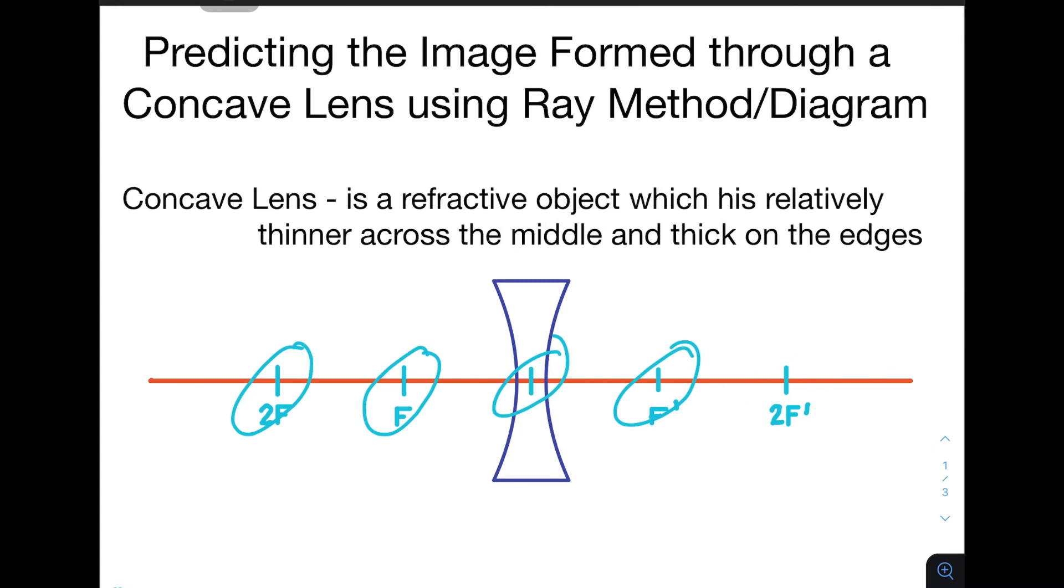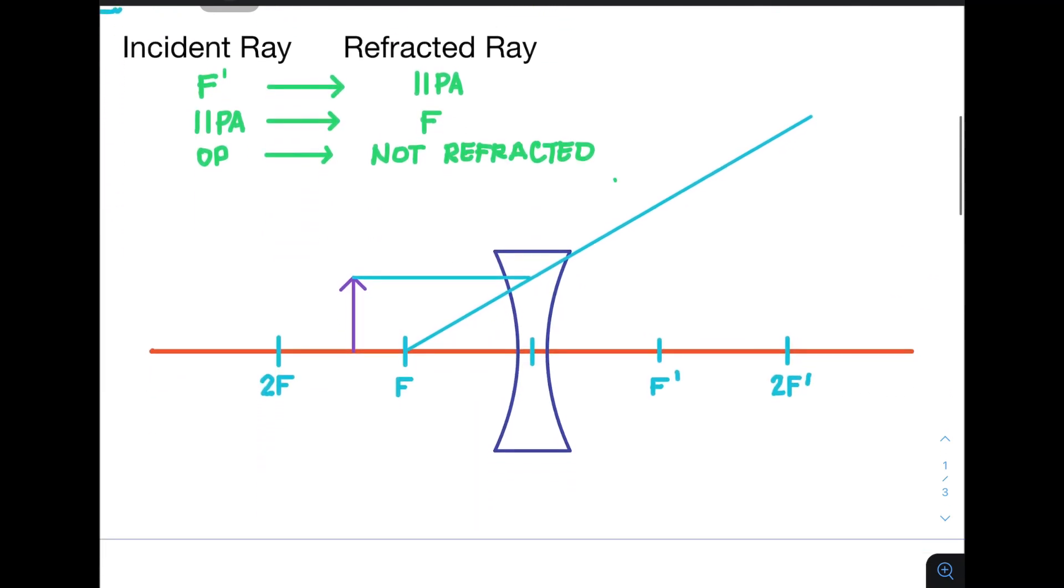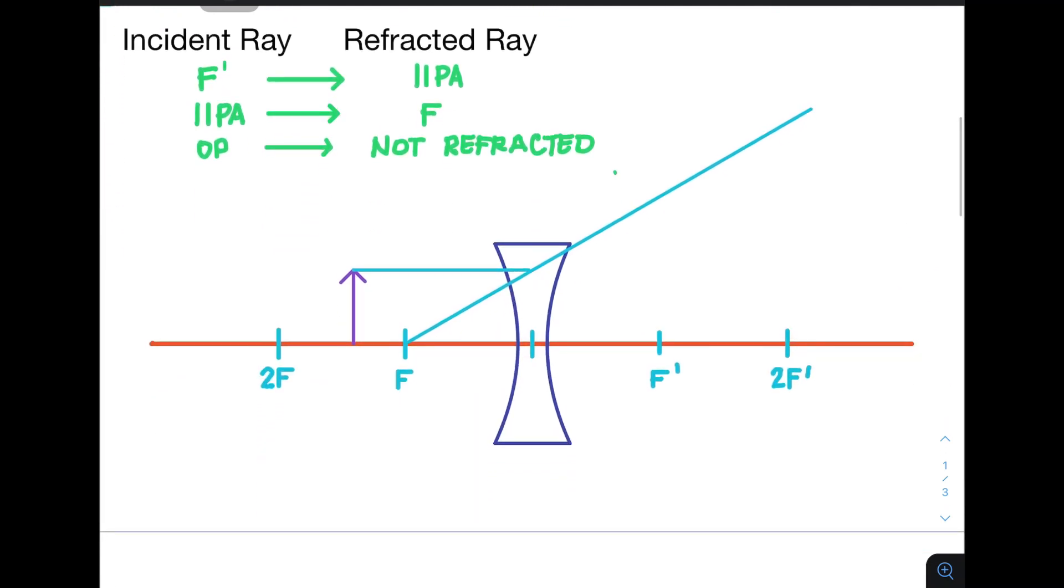In terms of the rules of the concave lens, it slightly changed compared to the convex lens. Now, as you could see here, the incident ray starts with a line aligned with the focus prime instead of the focus.